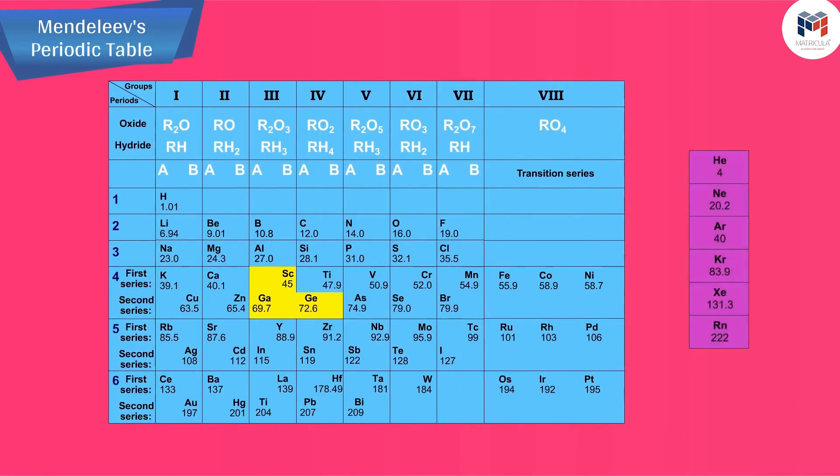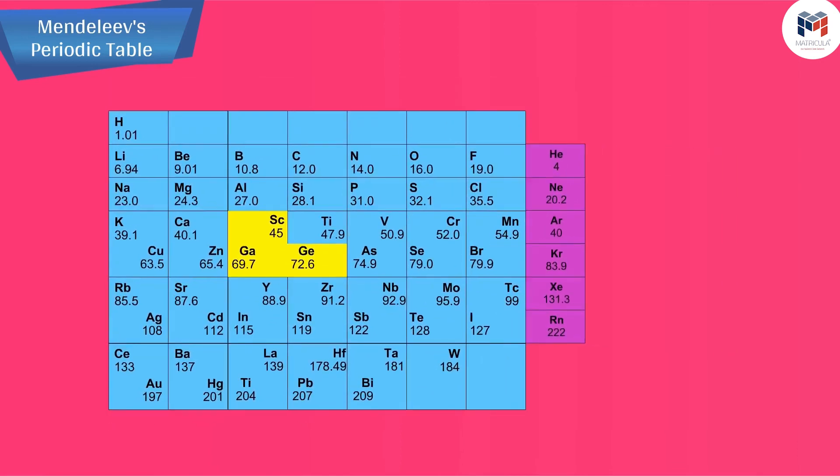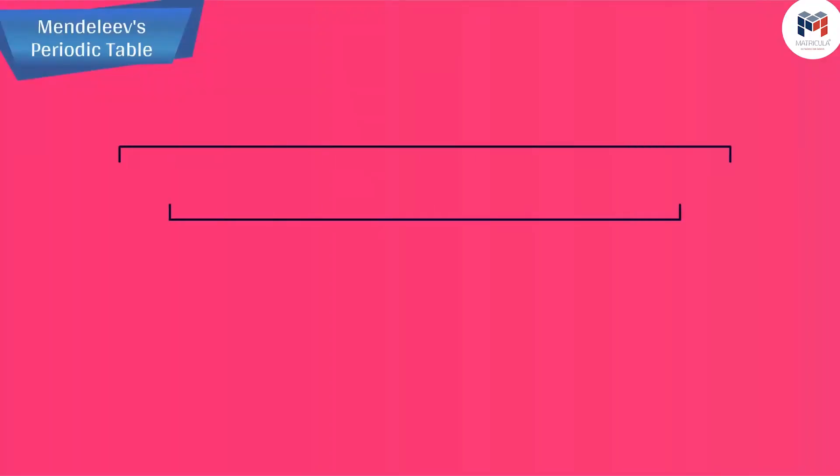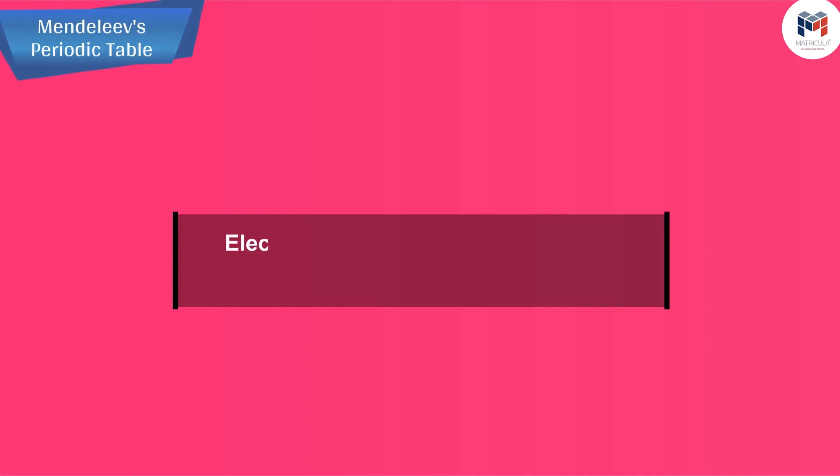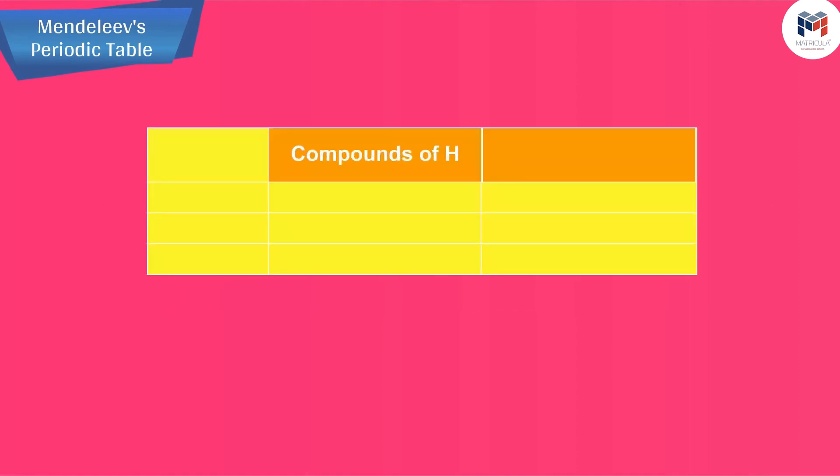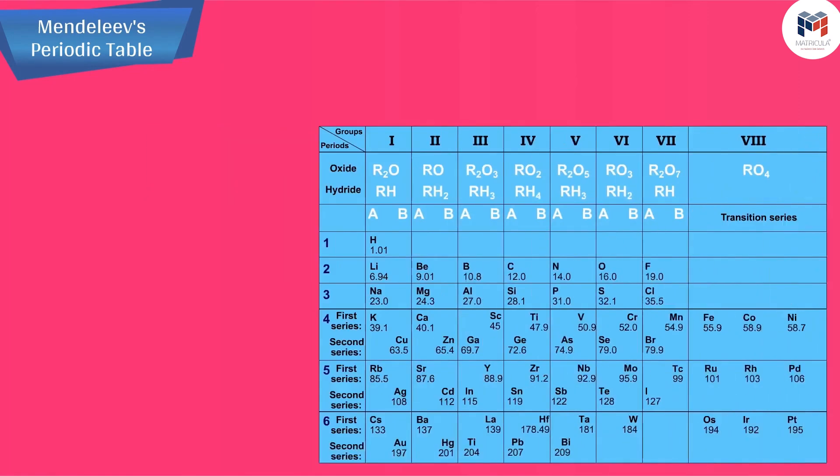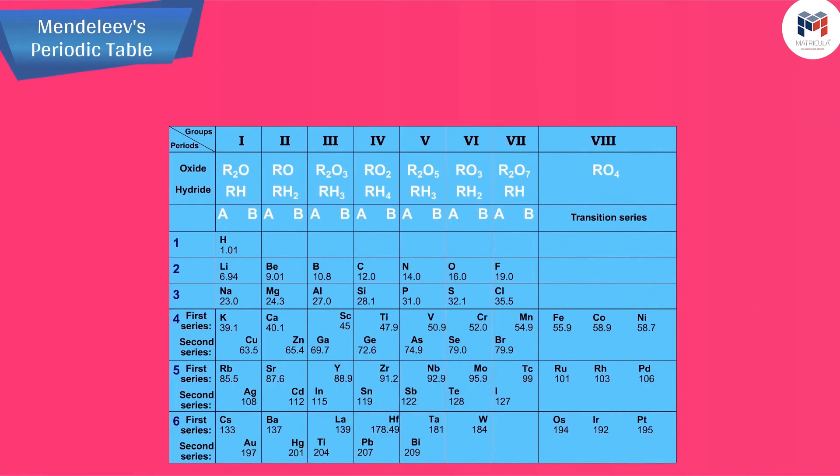Let us now discuss the limitations of Mendeleev's classification. Electronic configuration of hydrogen resembles that of alkali metals. Like alkali metals, hydrogen combines with halogens, oxygen, and sulfur to form compounds having similar formulae as shown in the examples here. On the other hand, just like halogens, hydrogen also exists as diatomic molecules.